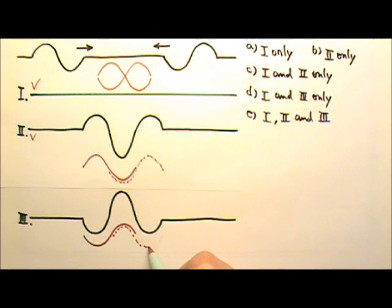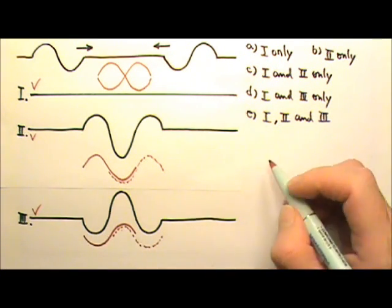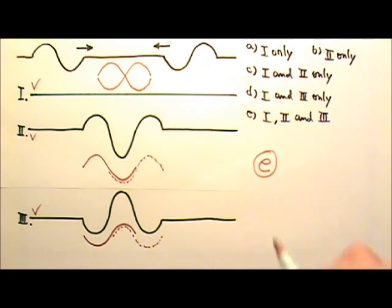the waves will look like this. So, this part is the same, that part is the same and then these two peaks overlap and gives us a bigger peak. So, number three is also correct. The answer is E.